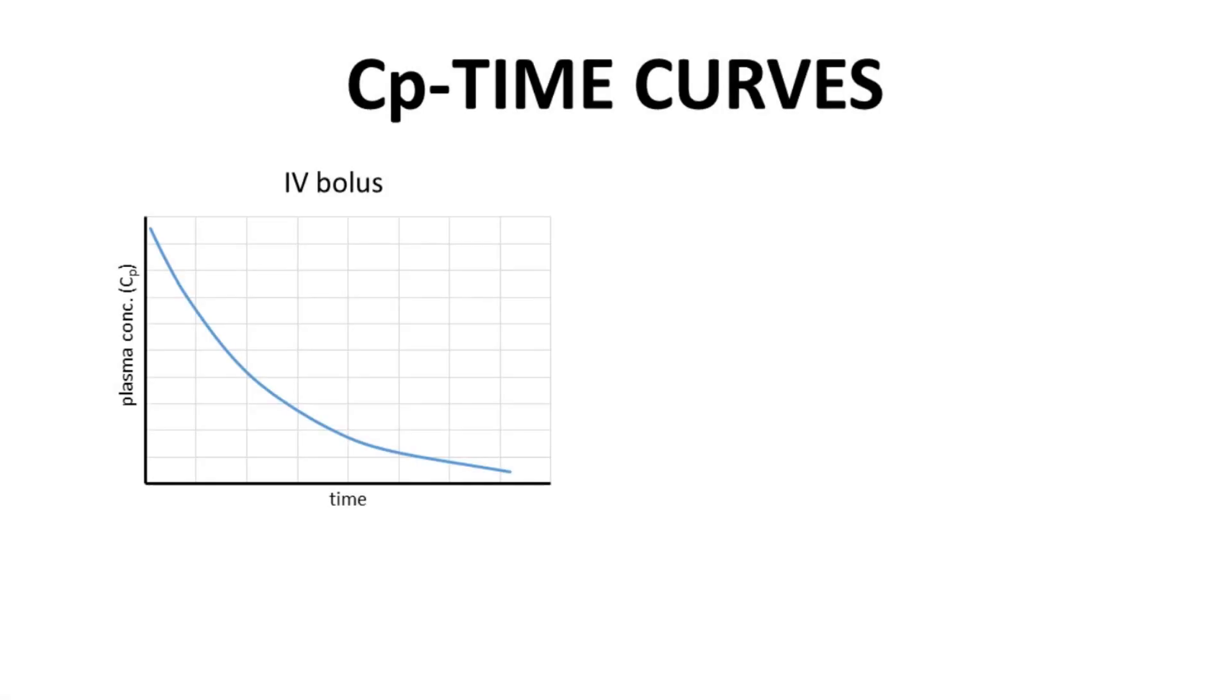On the screen is a graph that relates the concentration of a drug measured as the concentration of the drug in a patient's plasma, CP versus time. This particular curve corresponds to a drug that has been directly injected into a patient's circulatory system, intravenous or IV administration. Note that the concentration of the drug is immediately high at the time of injection, then the concentration decreases as the drug is broken down or removed by different processes in the body.